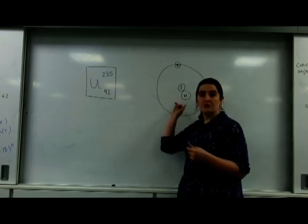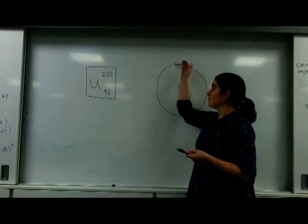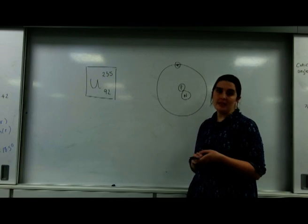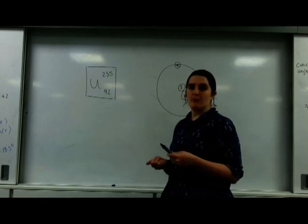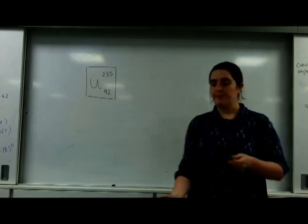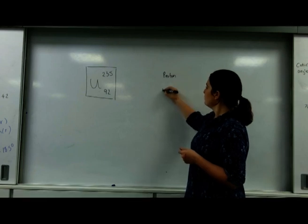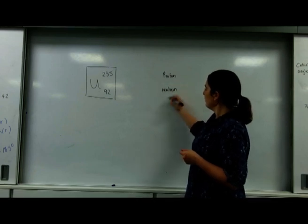This is still true: protons and neutrons are found inside the nucleus of the atom, and electrons are found orbiting the outside. But we have to be a little bit more specific about the information. So, proton, neutron, and electron.